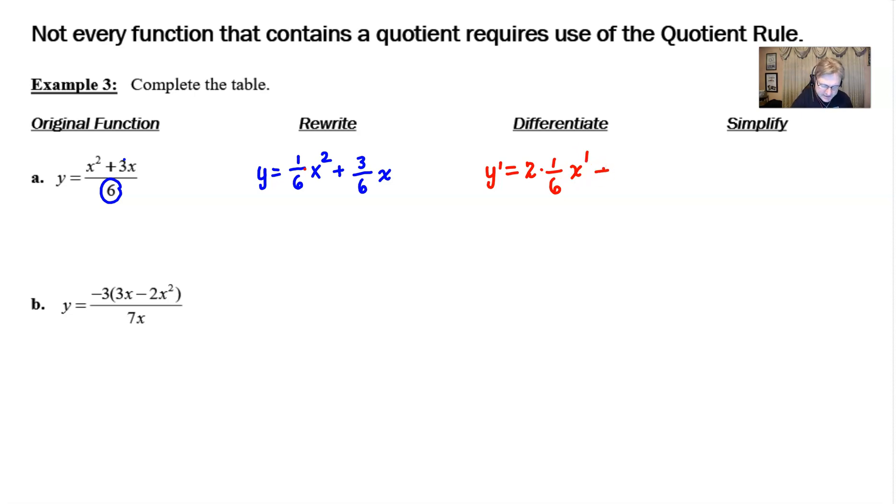We essentially do the same thing with the three over six times x, but in that particular instance, the derivative of a constant times x uses the constant multiple rule that says the answer is only going to be that constant three over six.